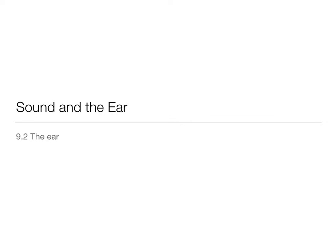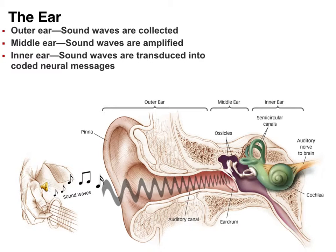Kristen Atchison here and we're still on chapter nine. We are on our second video lecture talking about the ear. The ear is really broken down into kind of three pieces: the outer ear, which is the part that you see — when you think of your ear, you're thinking about your outer ear.